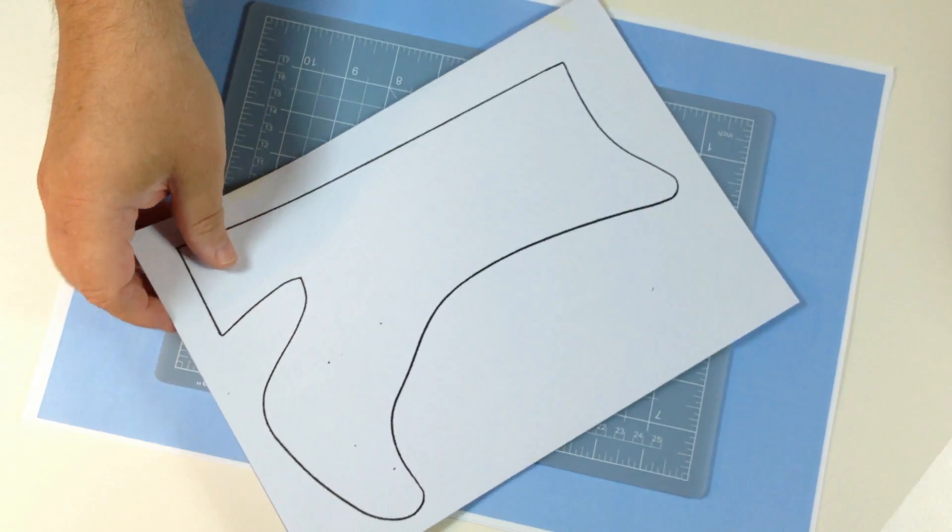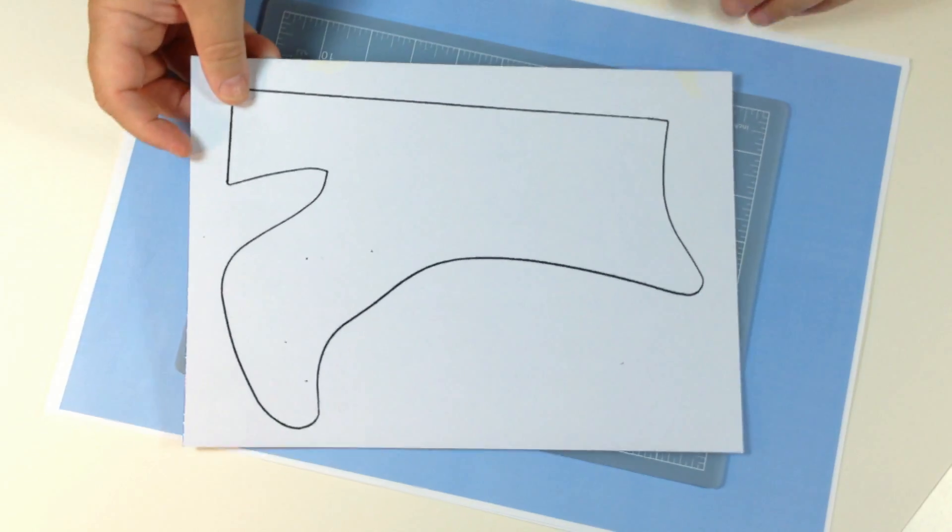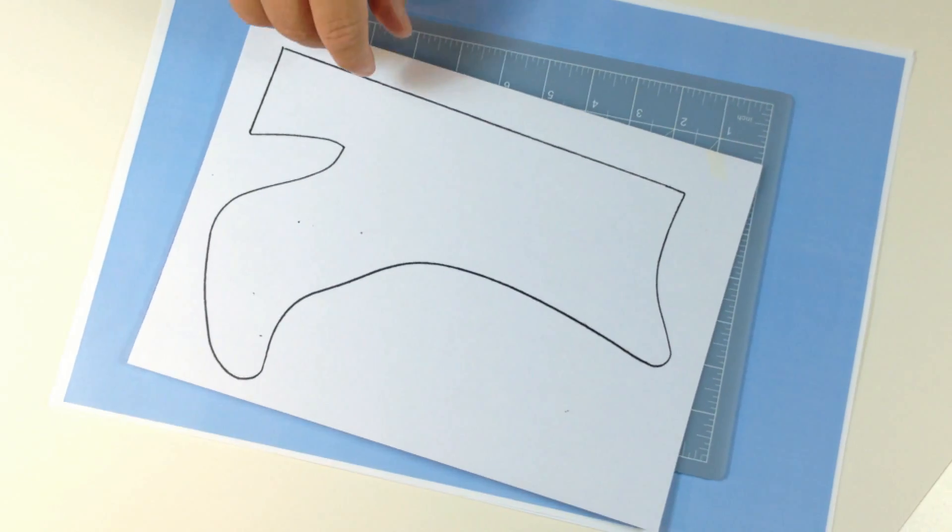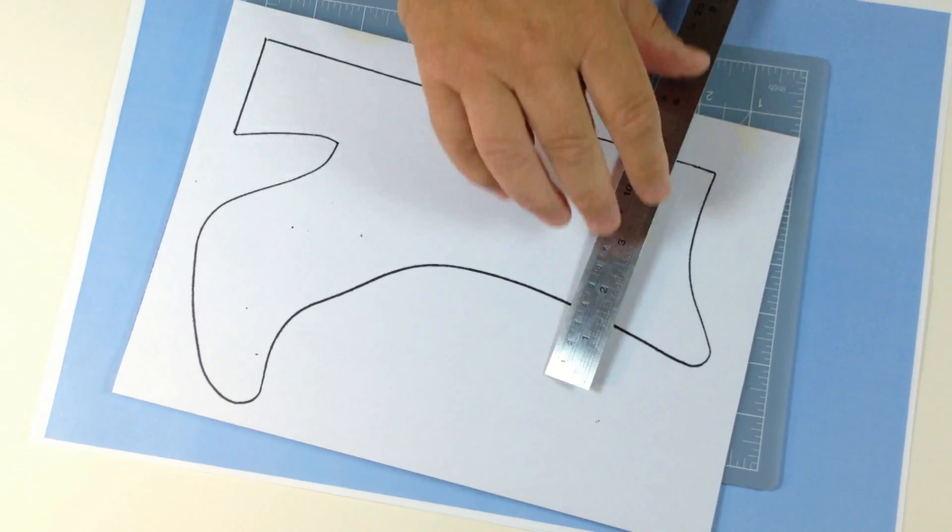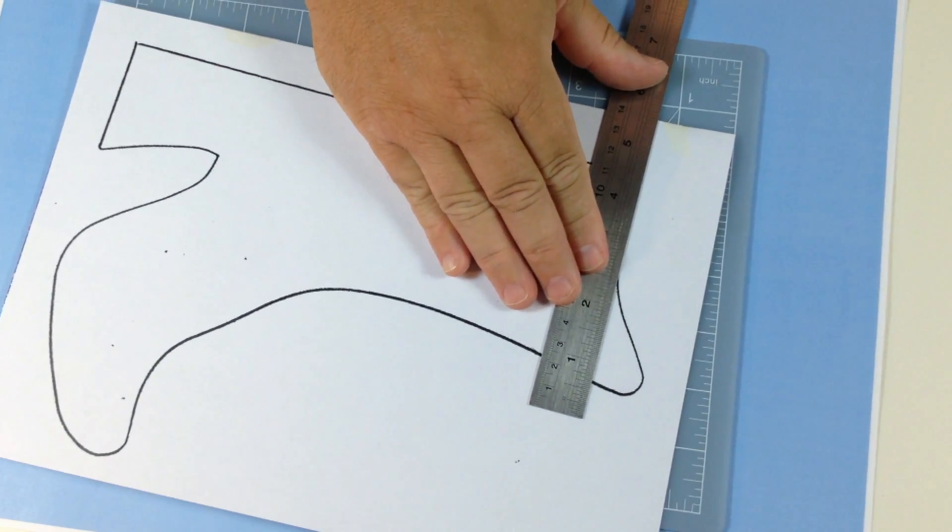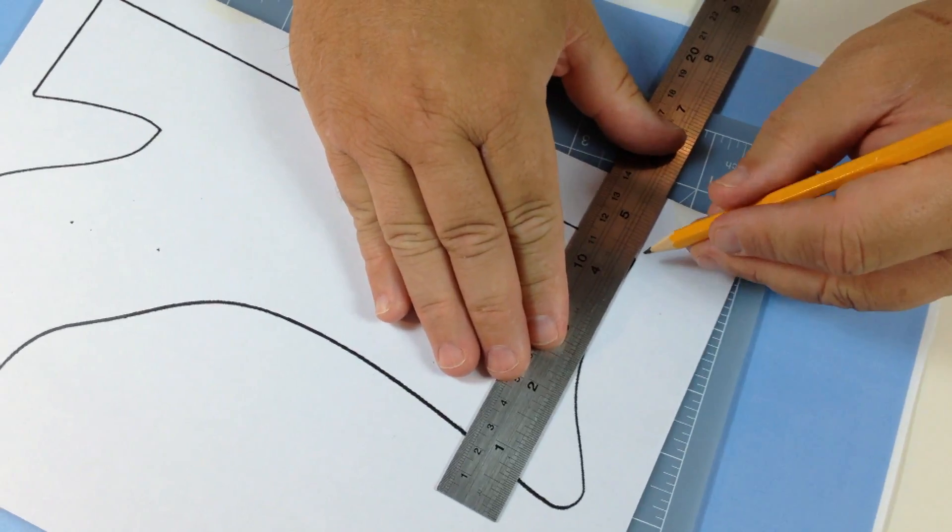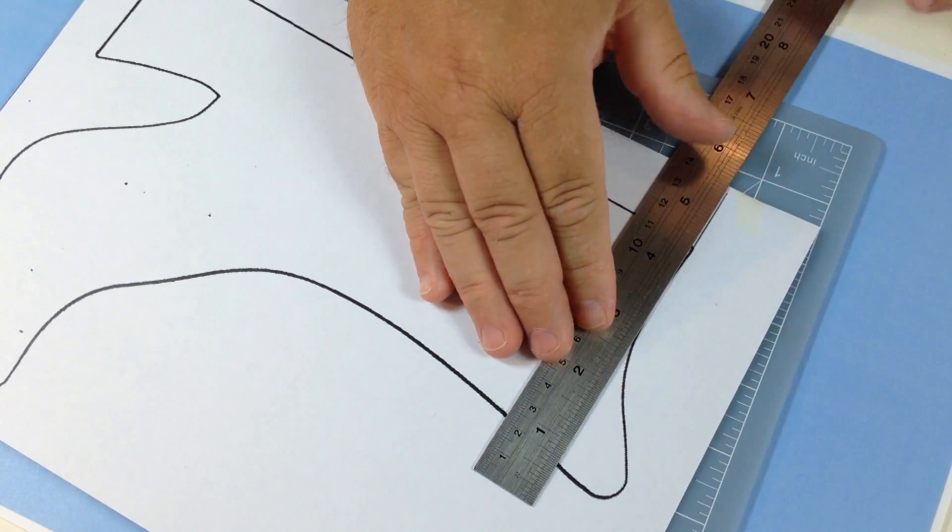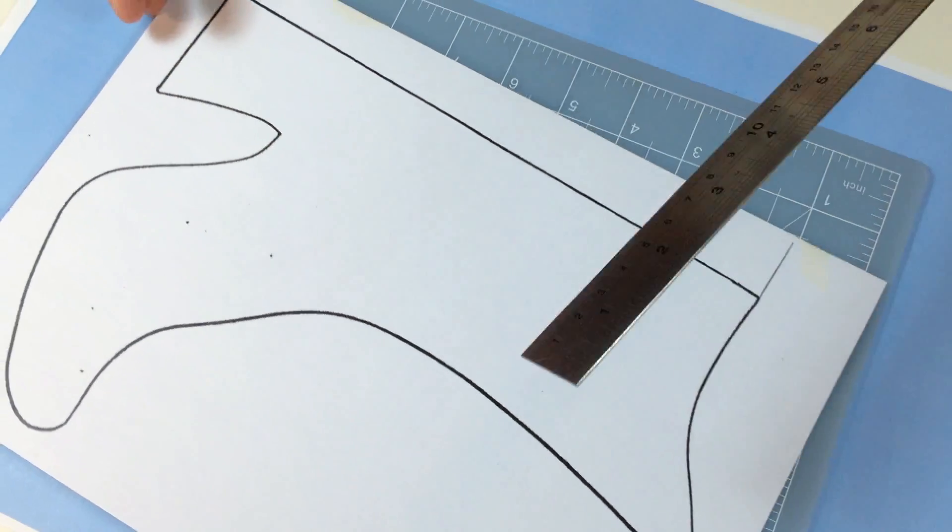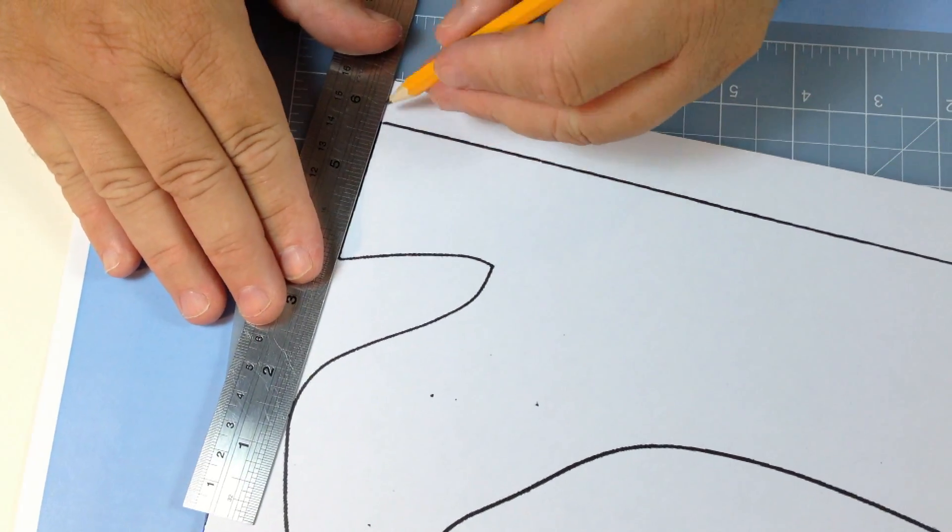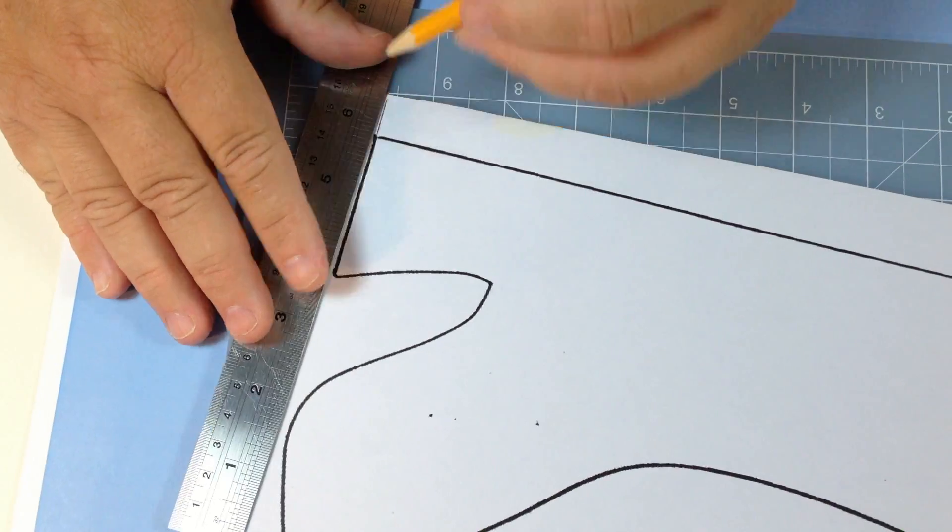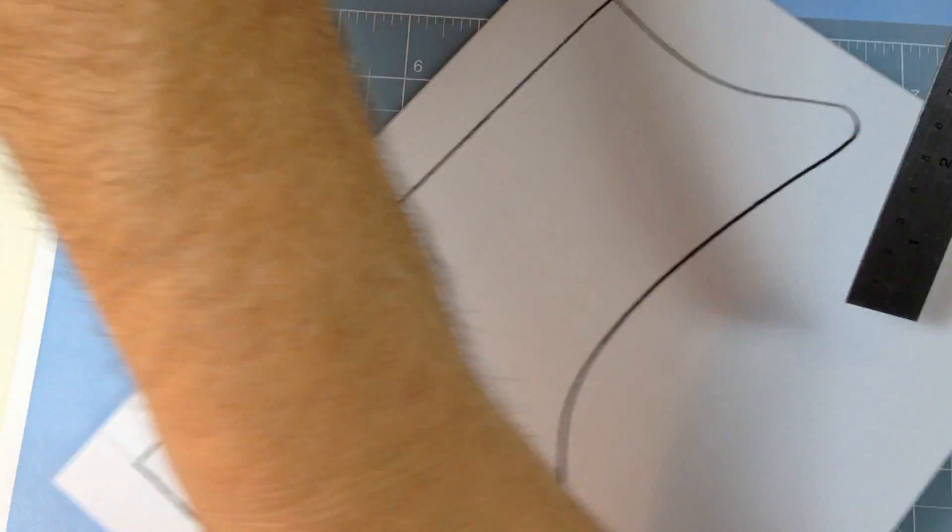Then you want to print out the template again and cut out the next section. But before you cut out the front, you need to add a little bit of a guide for yourself. Take a ruler and a pencil and do a straight line to make a kind of a little flap that's going to stick behind the boot.